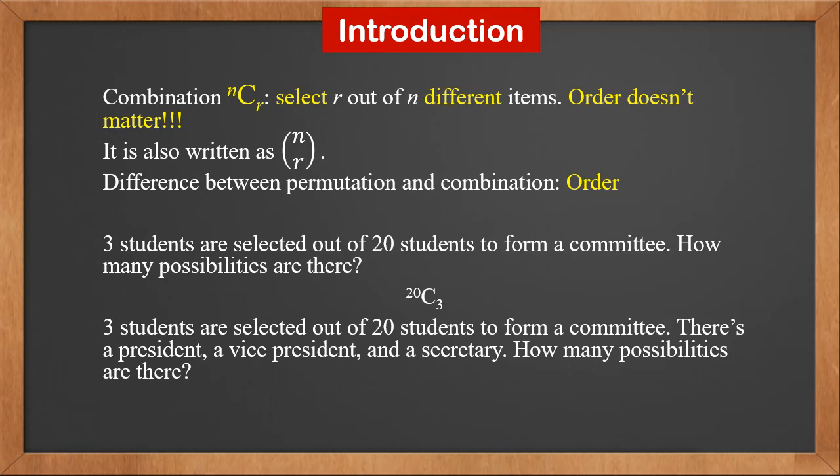However, if three students are selected out of 20 students to form a committee, and one is president, one is vice president, one is secretary, then the order matters, because it is a different possibility if a student holds a different title. So in this case, the answer is 20P3.